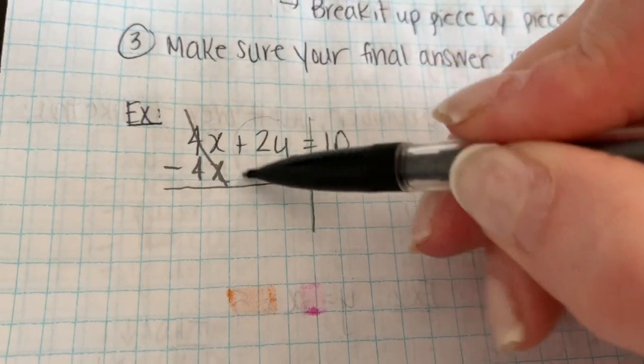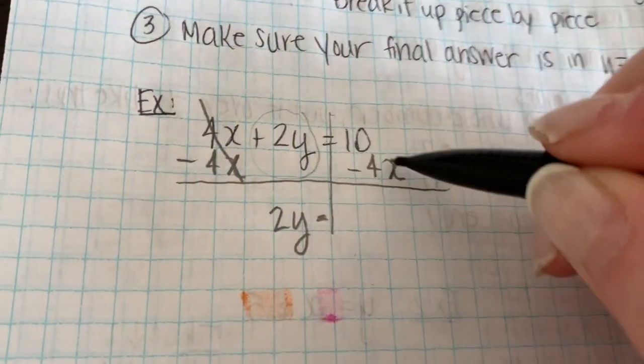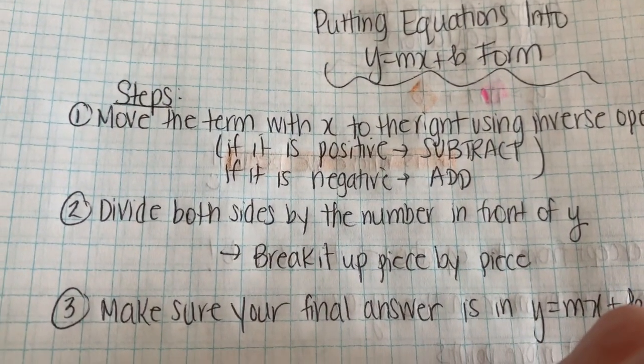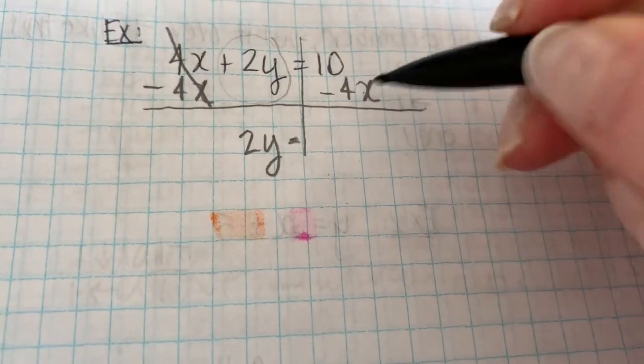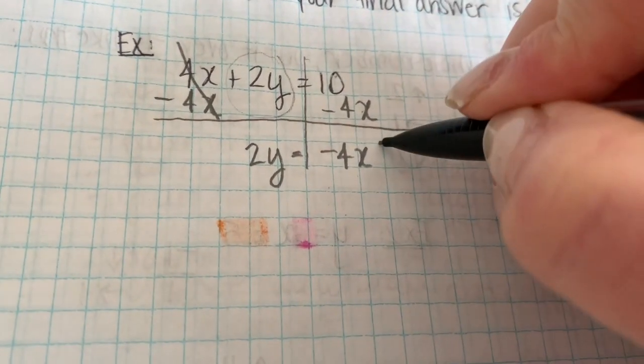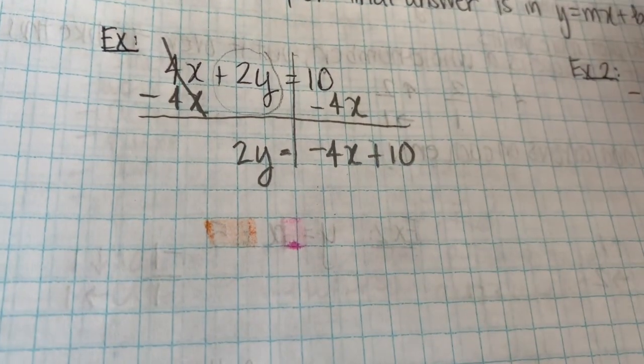So I'm going to subtract 4x from this side. So what's left here is my 2y. So that comes down, is equal to, I'm going to put my 4x in the front so that it stays in y equals mx plus b form. So it's negative 4x. And it's just going to be plus 10 because the 10 is positive. If the 10 was negative, it would have been minus 10.